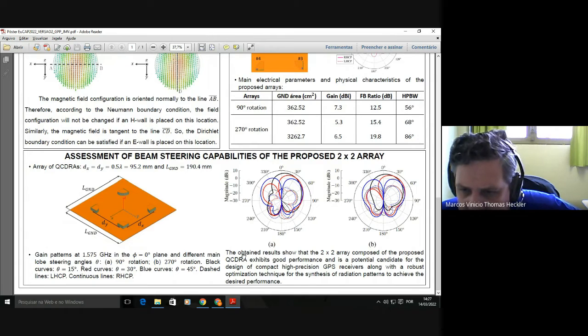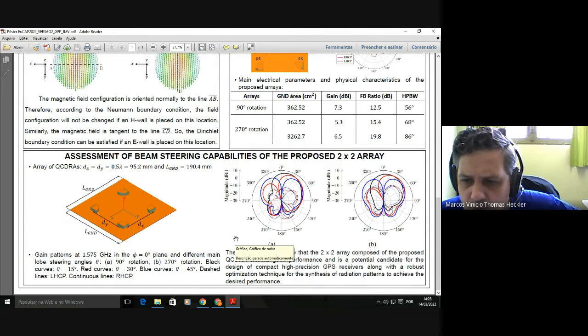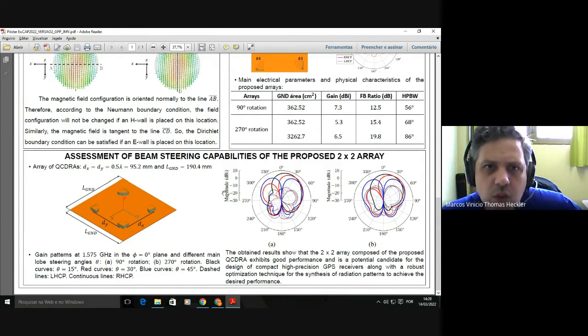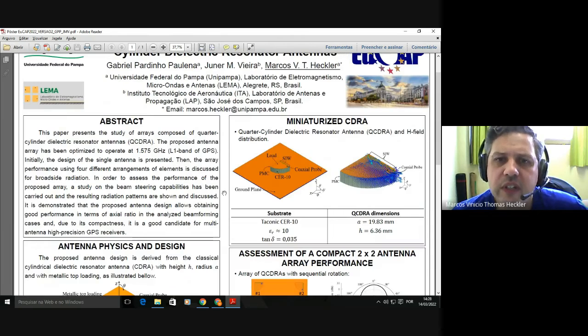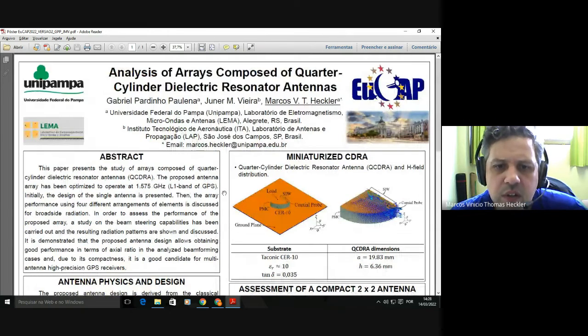Finally, the obtained results show that this 2x2 array exhibits good performance and is a potential candidate for the design of compact high-precision GPS receivers, along with a robust optimization technique that has been used to synthesize these radiation patterns. Thank you very much for your attention and interest in our paper.